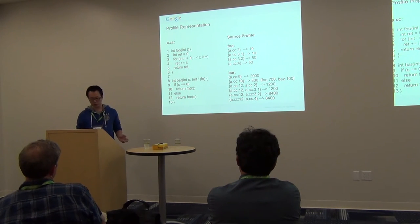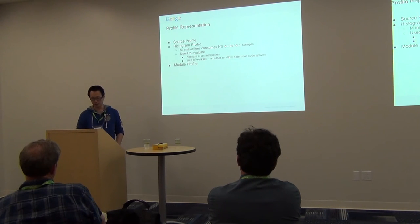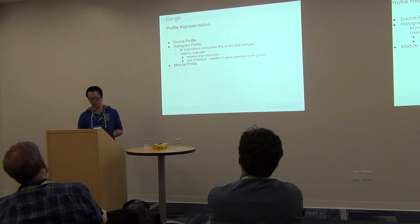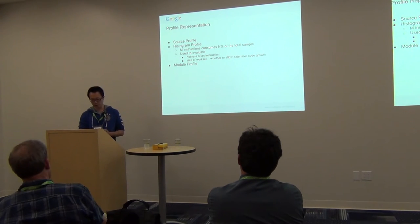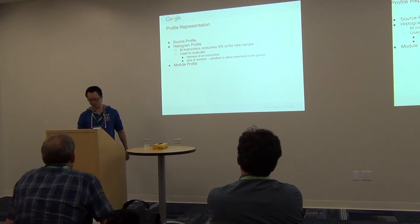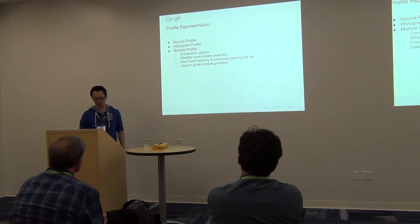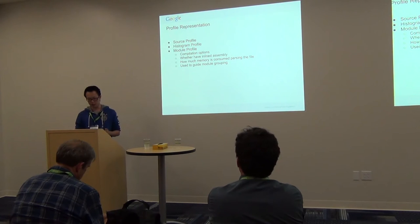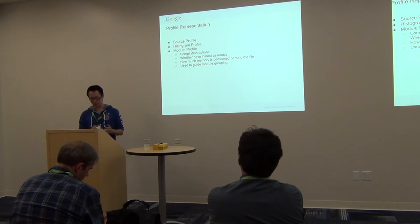The source profile is the major profile and the most useful thing in the AutoFDO profile. The second profile AutoFDO uses is a histogram profile, which tells how many instructions execute and consume what percentage of total cycles or samples. This profile is used to evaluate the hotness of an instruction, basic block, or function. It's also used to get the size of a working set, which is used to check if we want to enable aggressive optimizations that could lead to extensive code bloat, like loop unrolling. The third part of the profile is called the module profile, which is used for LiPo to do module grouping decisions. Since LiPo is not yet upstream, I won't go into much detail on that.